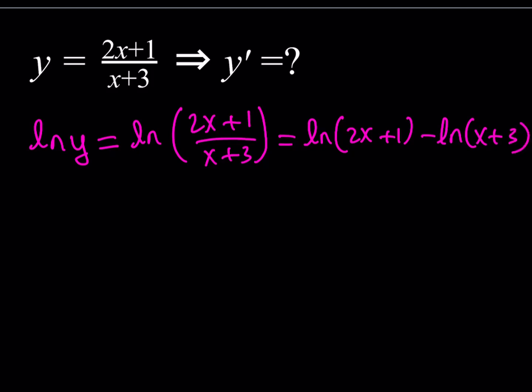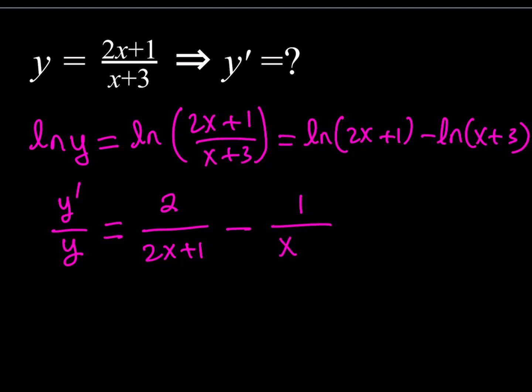Now I'd like to differentiate this. This became an implicit function, so we're going to do implicit differentiation. Since y is a function of x, the derivative of ln y is y prime over y. So I can write y prime over y equals the right-hand side differentiated. The derivative of ln(2x+1) is 2 over 2x plus 1, and then minus the derivative of ln(x+3), which is 1 over x plus 3.